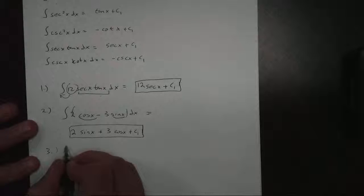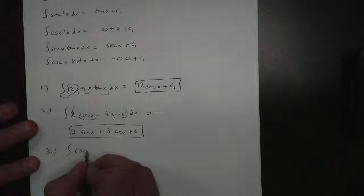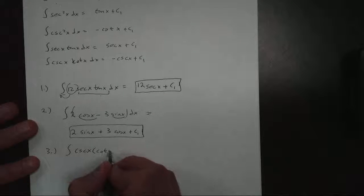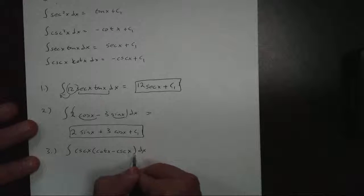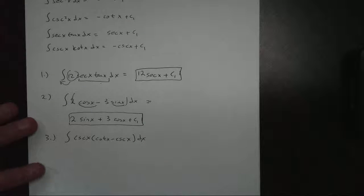Even if I get something a little bit harder, like this one. Cosecant of x times cotangent of x minus cosecant of x dx. Now, remember, there's no product rule, so I have to distribute.